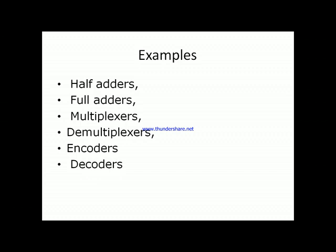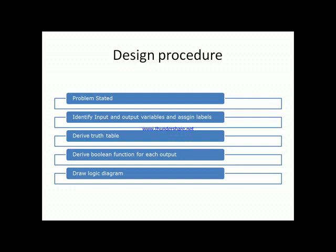Now let us discuss the step-by-step procedure to design any combinational circuit. There are five steps. Step one: the problem must be clearly stated. Step two: identify the set of input and output Boolean variables. Step three: assign letters or labels to those variables, then build a truth table showing the relationship between input and output variables — for each input combination, what will be the output.